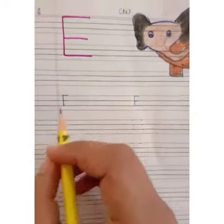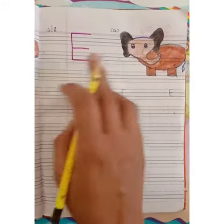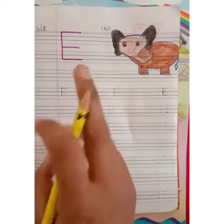Now we will write E. E for elephant. E for elephant. E sounds F. E sounds F.